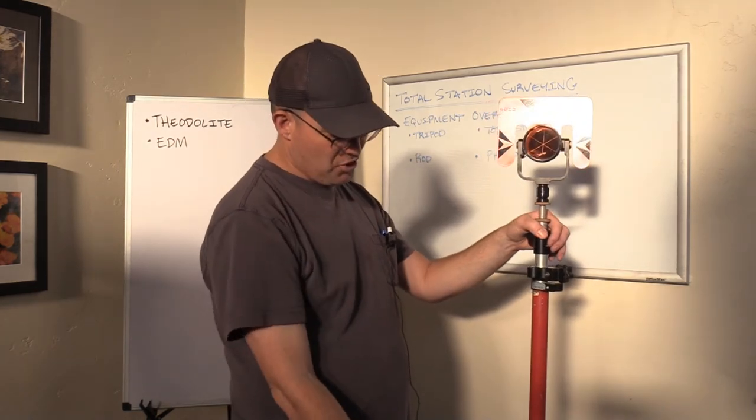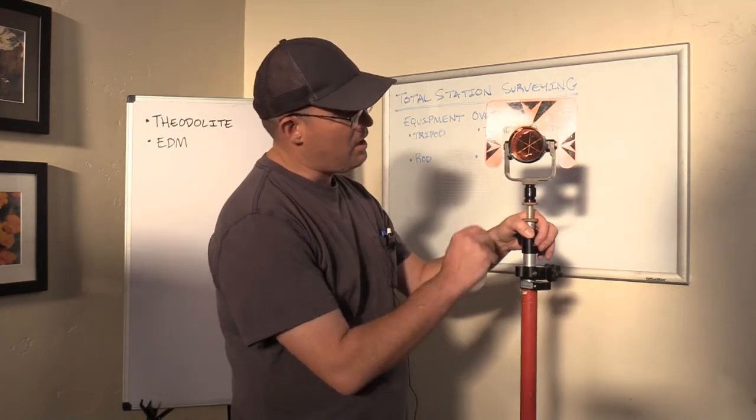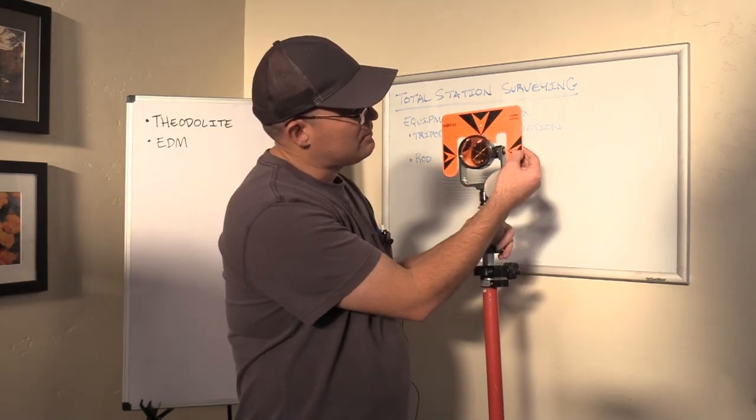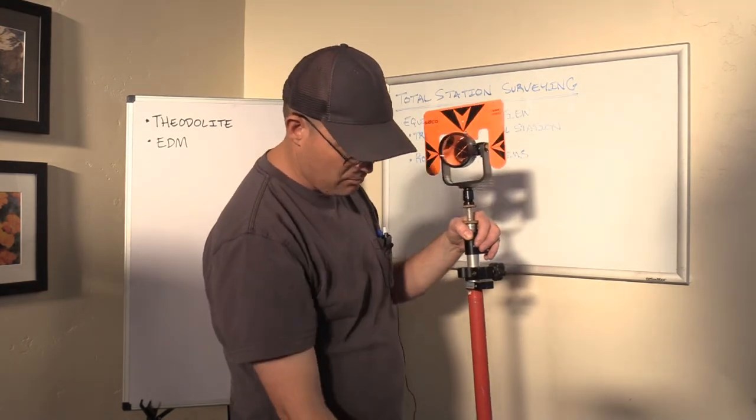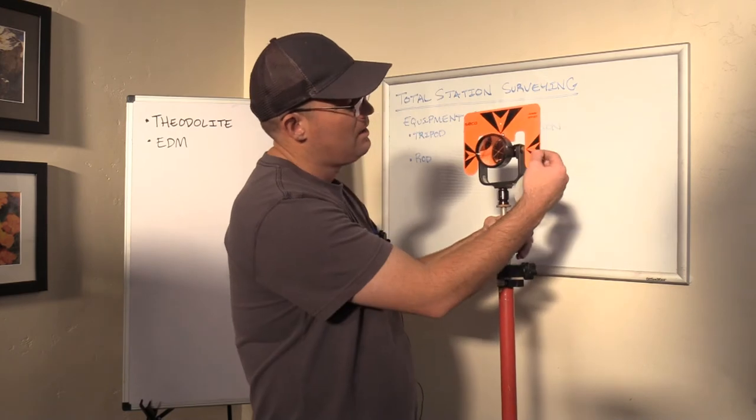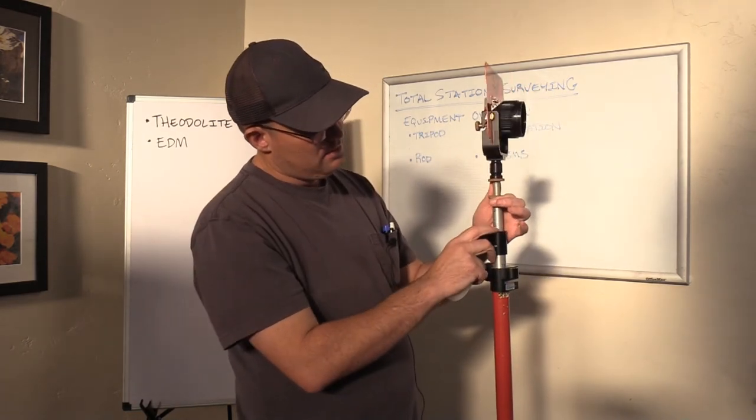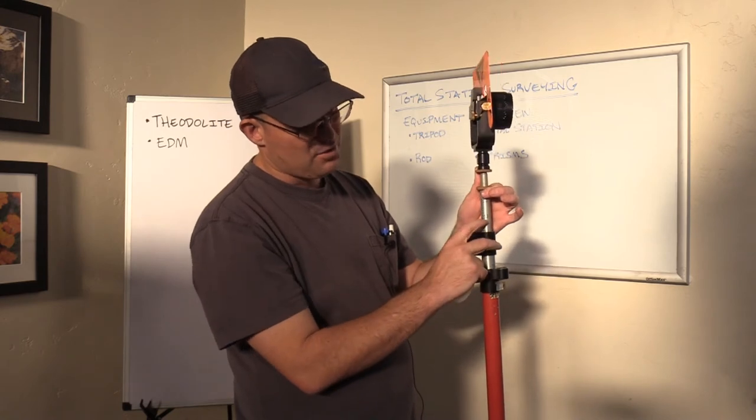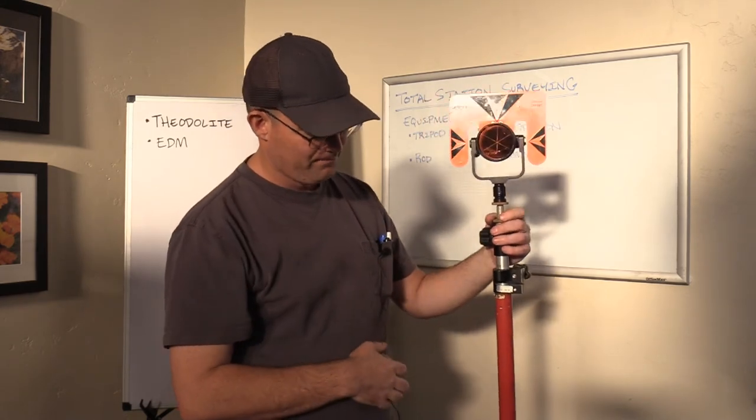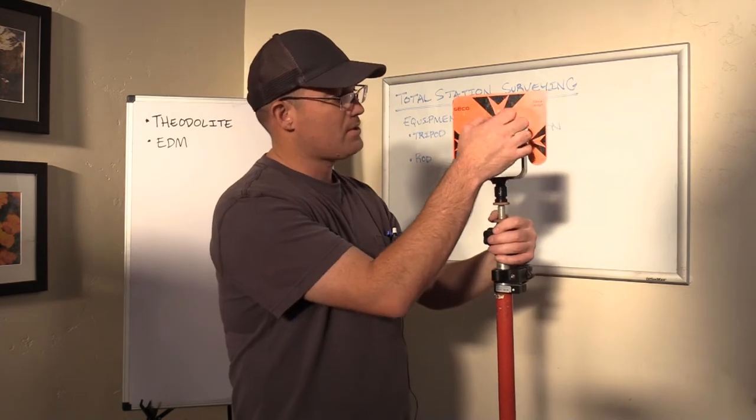The other thing is when you check your rod height, like I talked about, you're going to measure to this mark right here that tells you where the center of the prism is. So when you put your tape measure at the bottom of the rod and you measure to that mark, it should match the distance or the height that you're getting off your numbers here if your rod's properly adjusted. That's how the rod works.